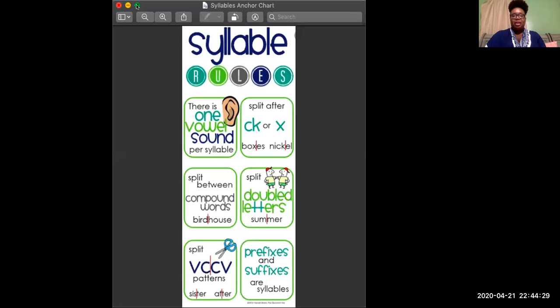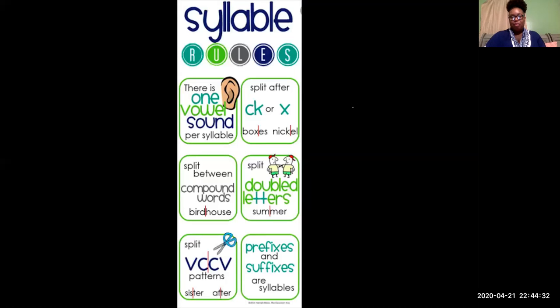Remember, syllables are those things in words that help us become better readers, and I know we all want to become better readers. Here are our rules for syllables. There is one vowel sound per syllable. We always split after CK or X. For example, in our word boxes we're going to split our syllables right after that X. So it's foxes.